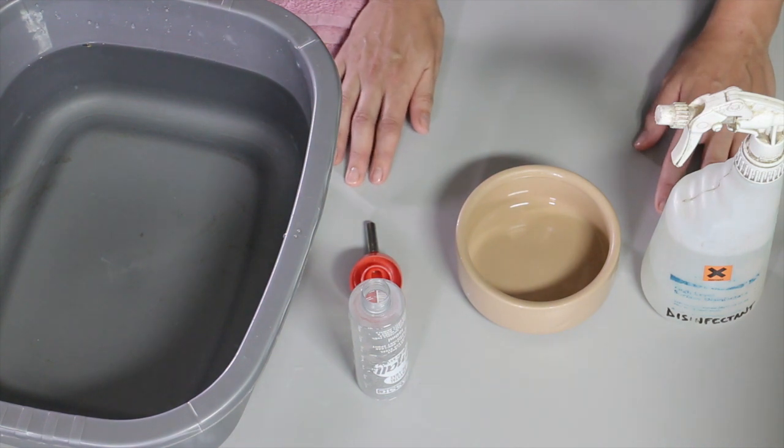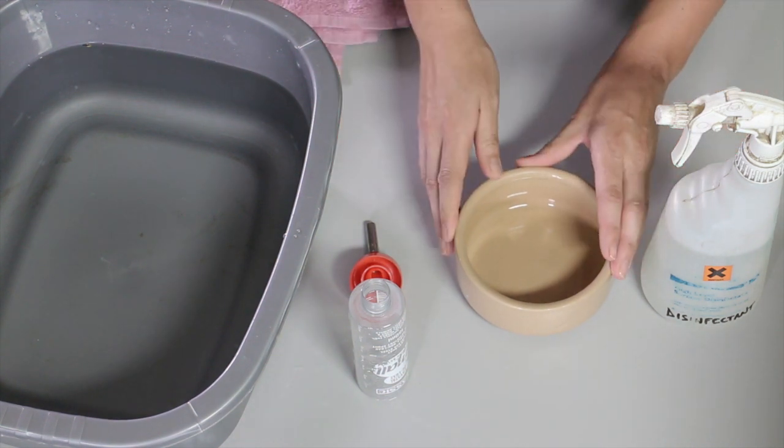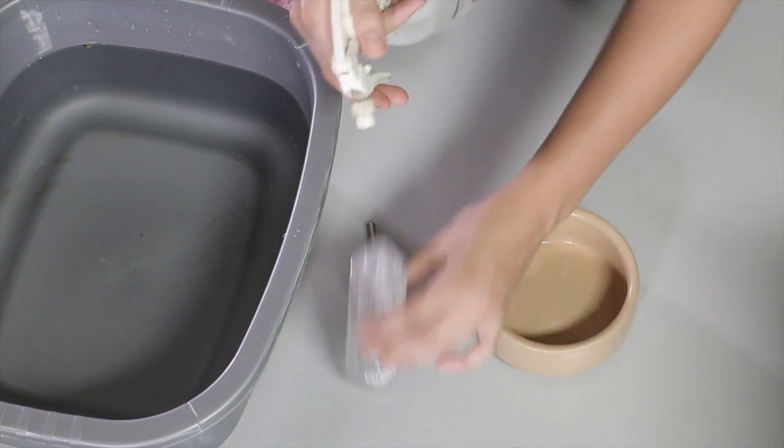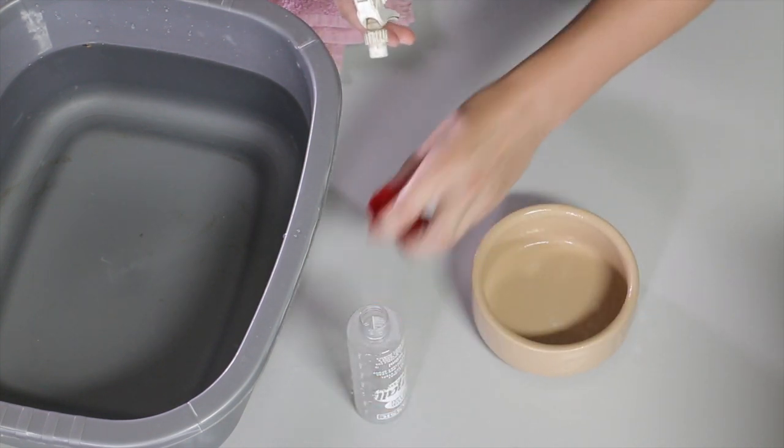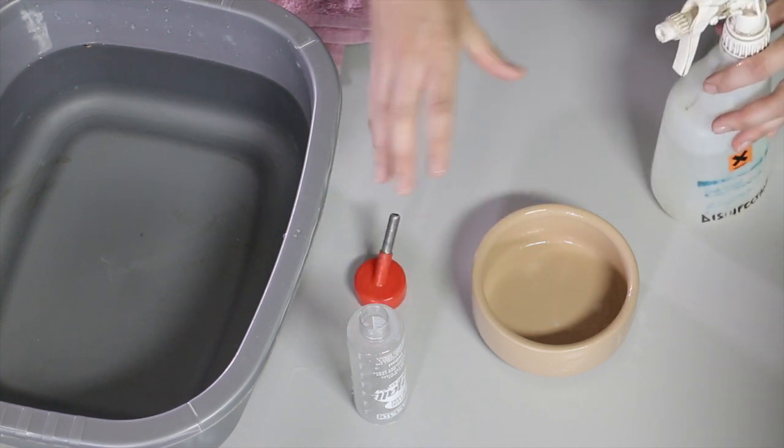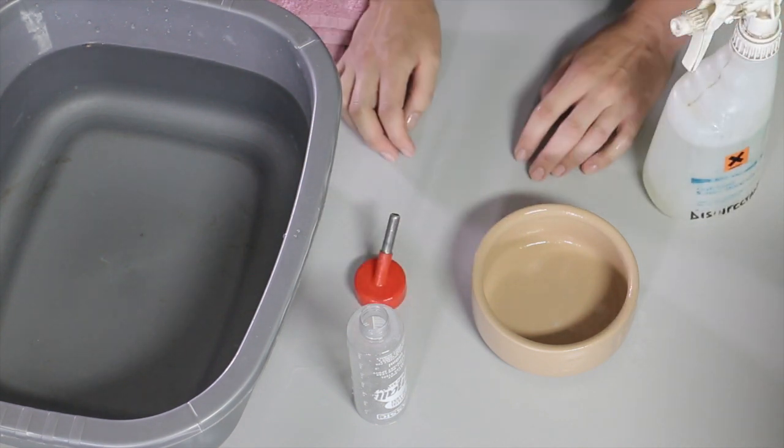The first step to preparing the chinchilla's food and water is to clean the bowl and bottle. I'm going to spray these with a disinfectant. The disinfectant has been pre-diluted and put into a spray bottle.